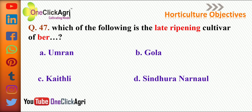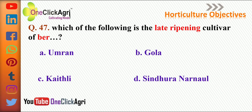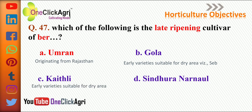The next question: which of the following is the late ripening cultivar of ber? The right answer for this question is Umran. Kaithali, Gola, and Sheb are the early varieties of ber and suitable for dry areas.